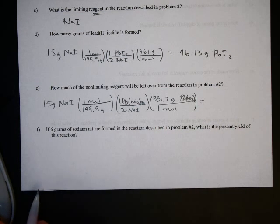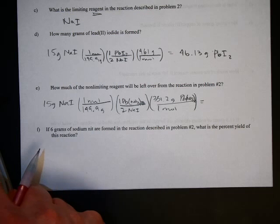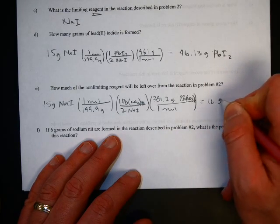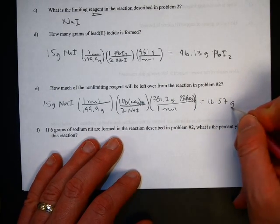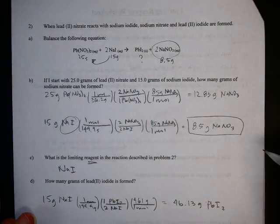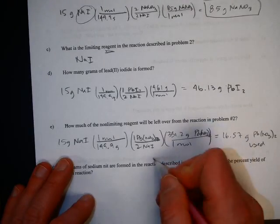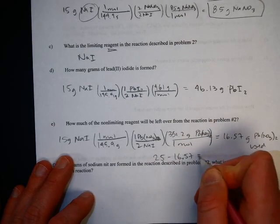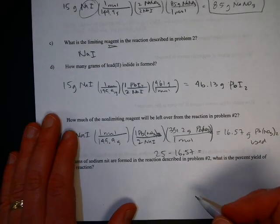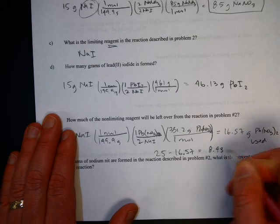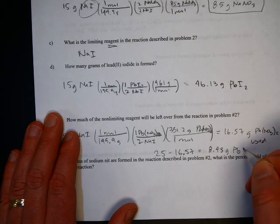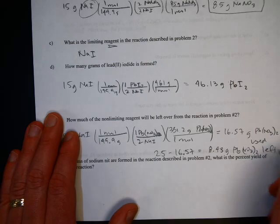So to do the math, take 15 times 331.2 divided by 149.9 divided by 2, and you get 16.57. That would be grams of lead nitrate used. So now you know that you started with 25 grams of it, so you take 25 minus that answer. And you get 8.43 grams left over.